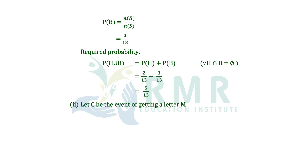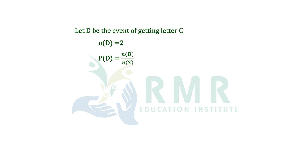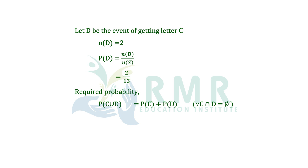For the second part, let C be the event of getting the letter M. So N(C) = 2. P(C) = N(C) / N(S), that is 2/13. Let D be the event of getting the letter C. So N(D) = 2. P(D) = 2/13. The required probability: P(C ∪ D) = P(C) + P(D), that is 2/13 + 2/13. After simplifying, we get 4/13.